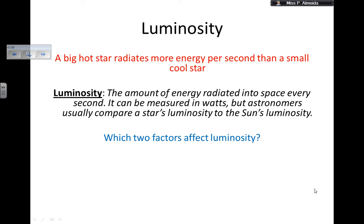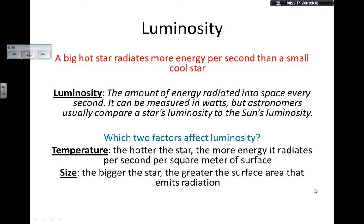Luminosity by definition is the amount of energy that a star radiates into space every second — so joules per second, measured in watts. Sometimes we compare a star's luminosity with the luminosity of the sun, for example saying a star is twice as luminous or a thousand times more luminous than the sun. A hot and big star radiates more energy than one that is small and cool. The factors that affect luminosity are the temperature of the star — the hotter it is, the more energy it radiates per second per square meter — and the size of the star, because the bigger it is, the greater the surface area that can emit radiation.